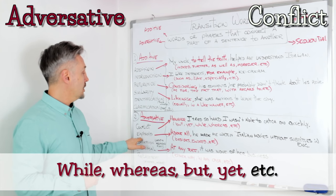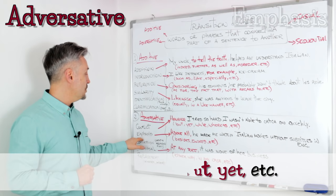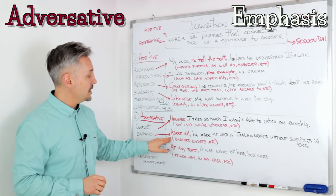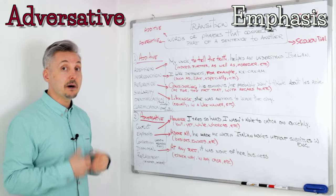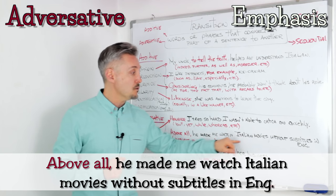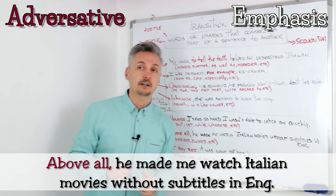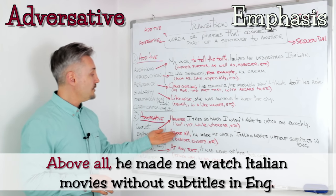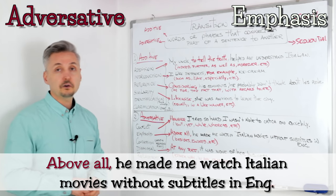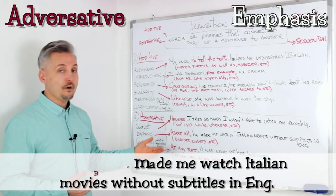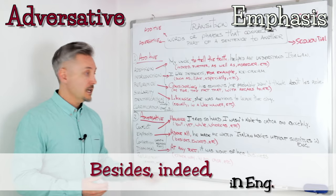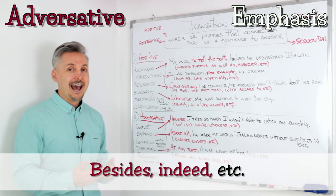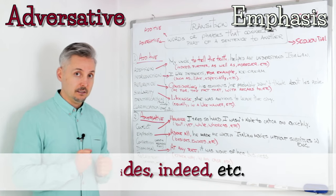The second subgroup is emphasis. For example: 'Above all, he made me watch Italian movies with subtitles in English.' 'Above all' could be replaced with 'besides' or 'indeed.' These are words you can use to add emphasis to your sentence.